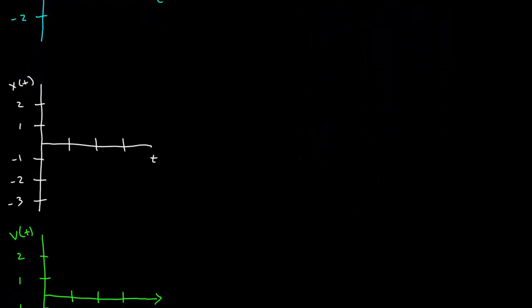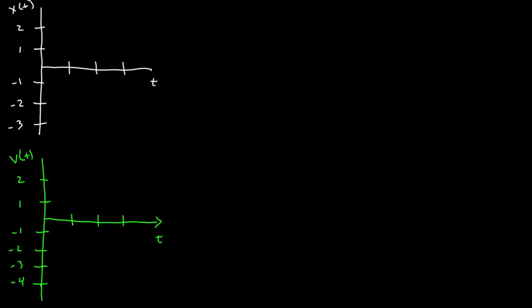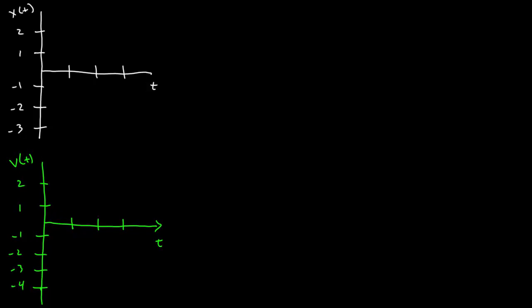Let's go ahead and do a second example here. In this case, I'm going to have a position function of 2t minus t squared.